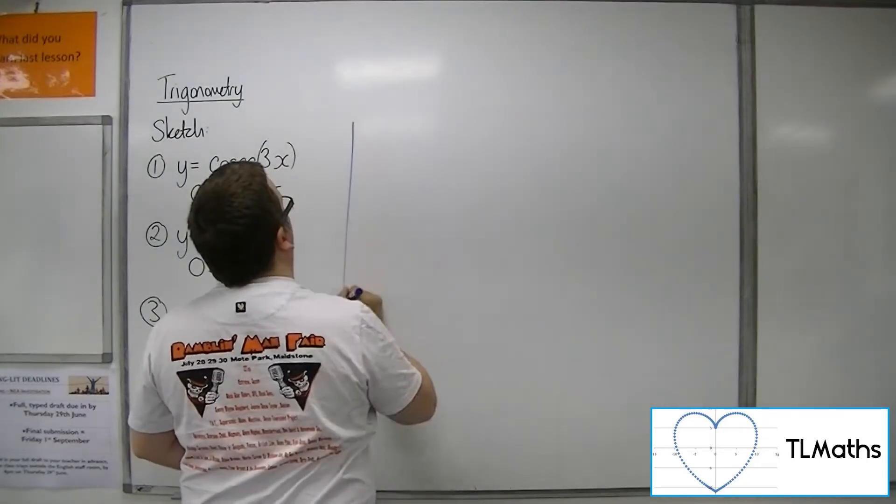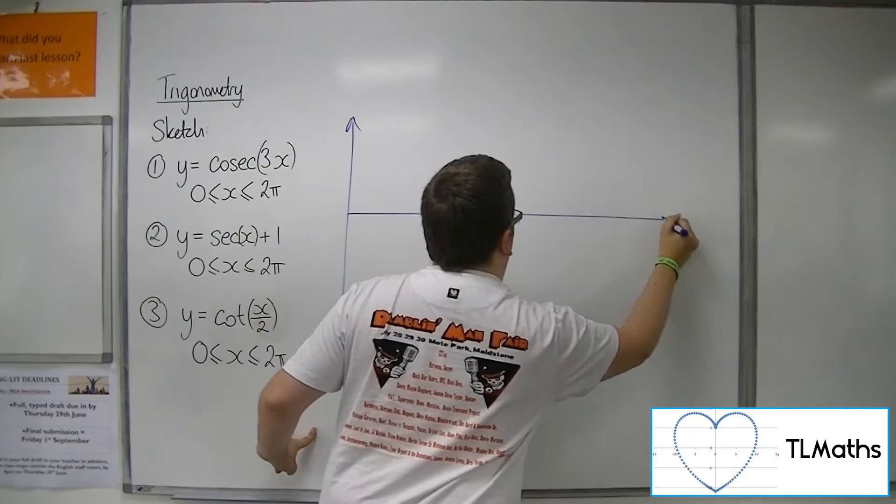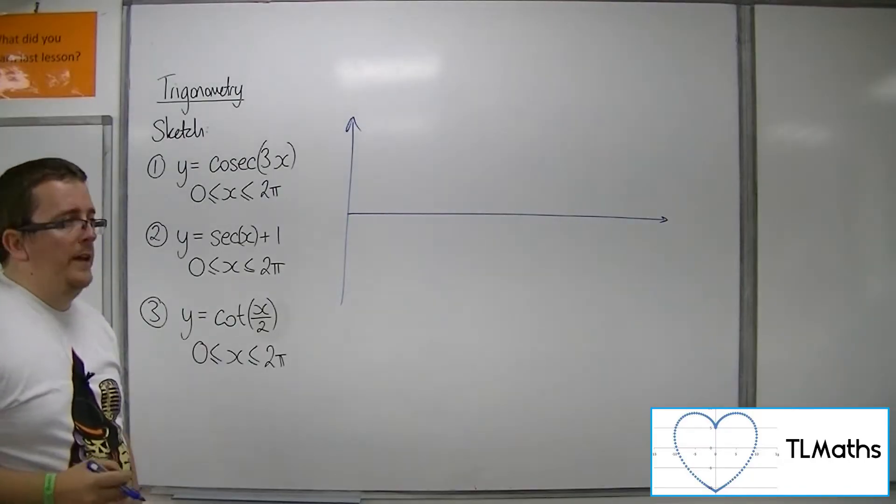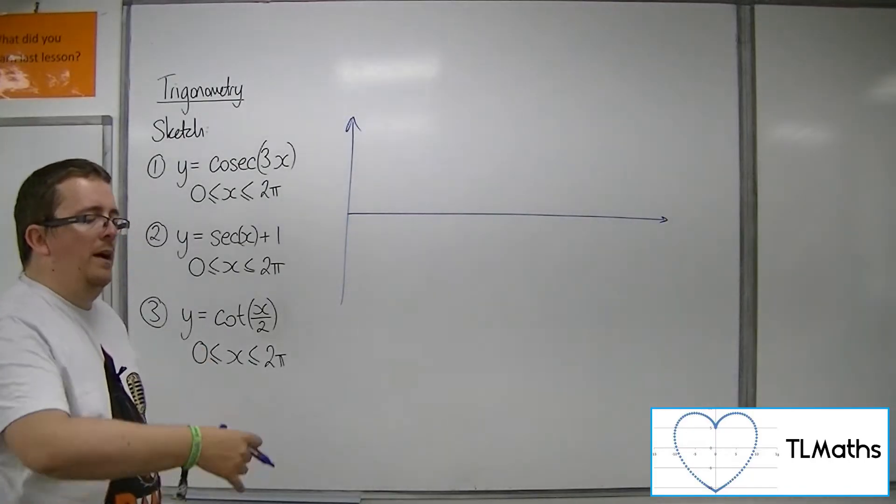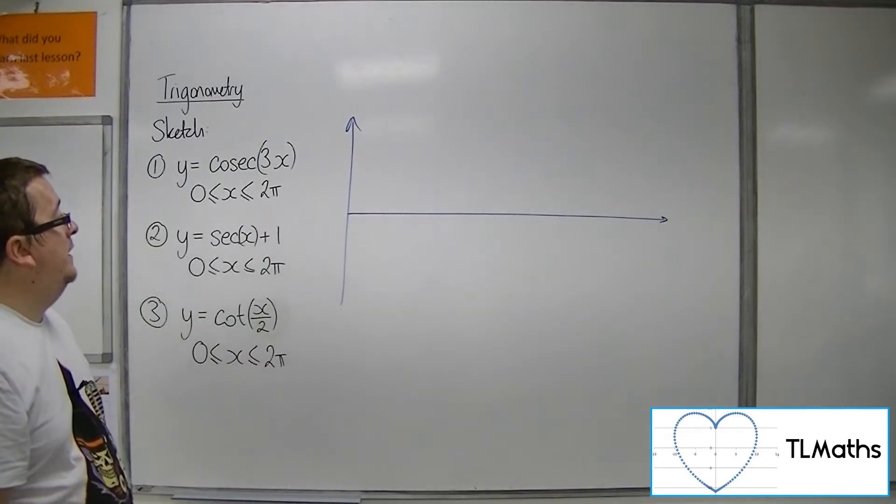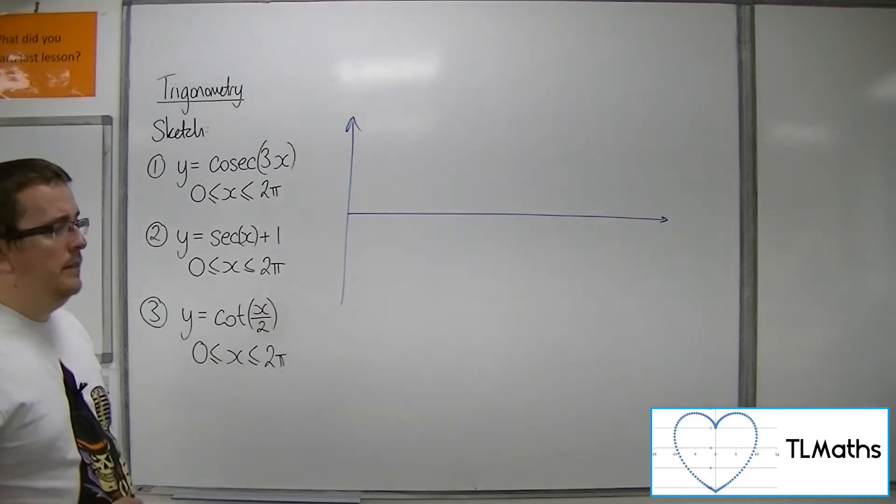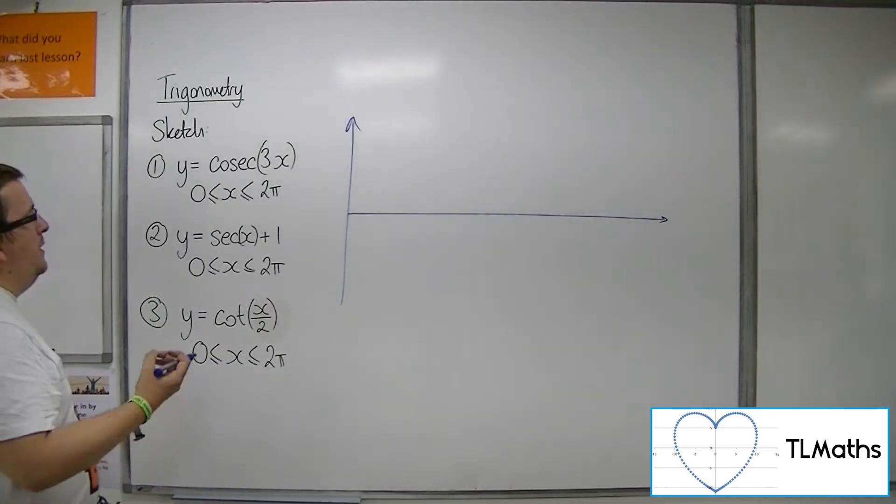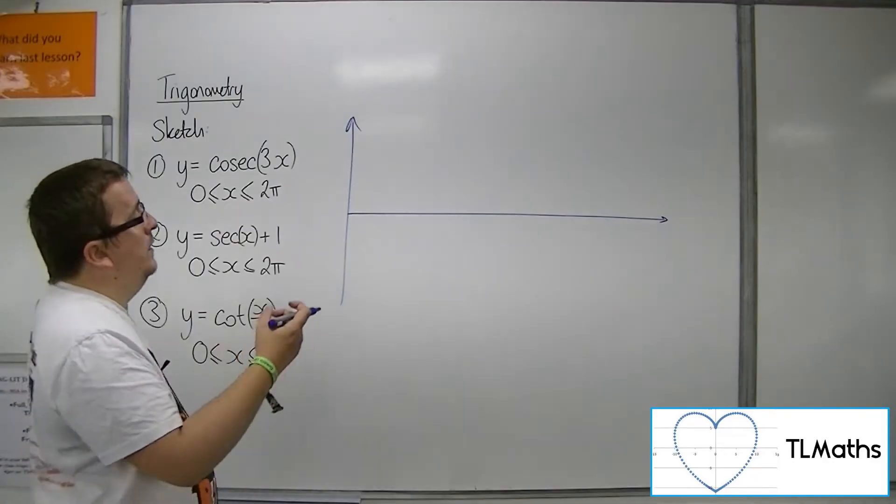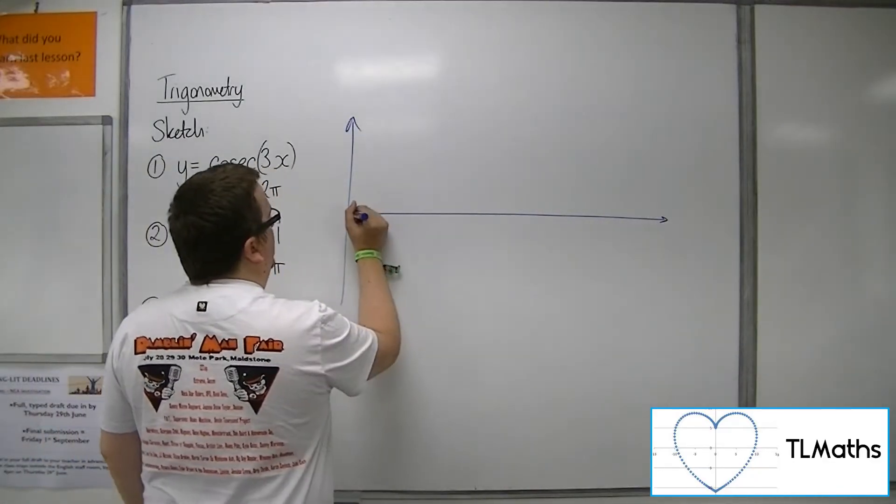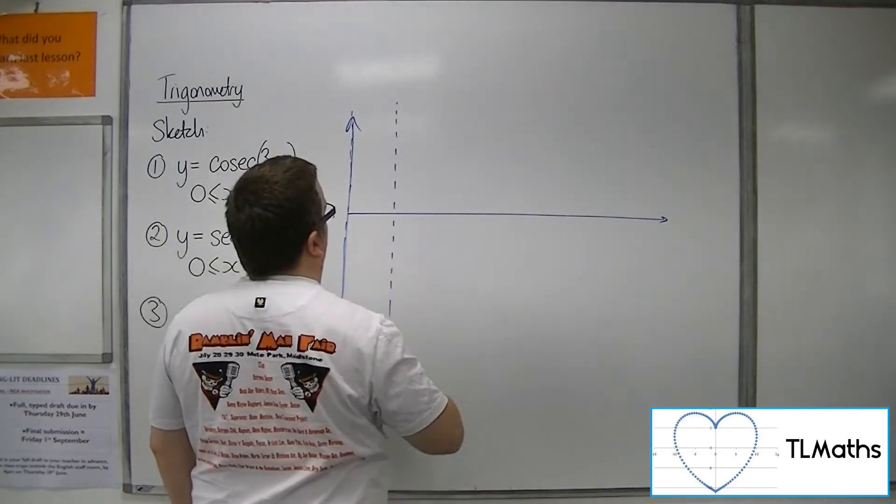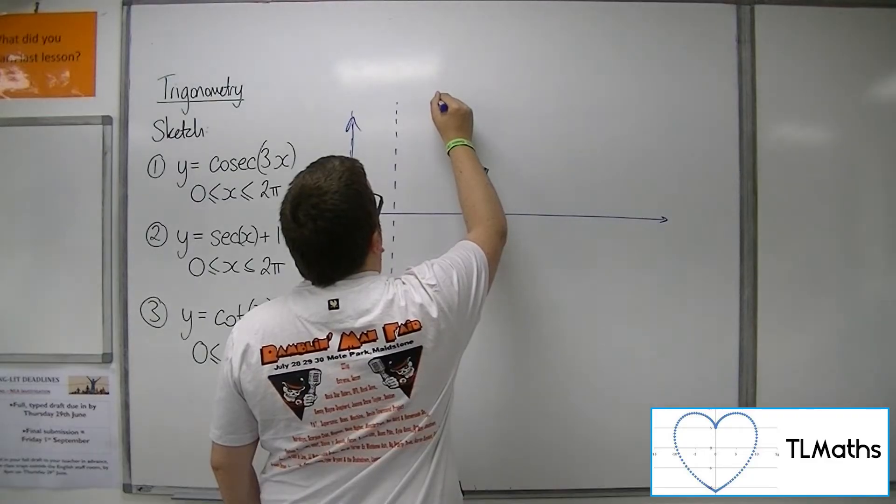Let's try and draw this. Now, cosec is 1 over sine, so sine is 0 at 0, 180, and 360, or 0 pi and 2 pi. Because that's going to be stretched by a factor of a third, we're going to have asymptotes at 0, at pi over 3, and at 2 pi over 3.